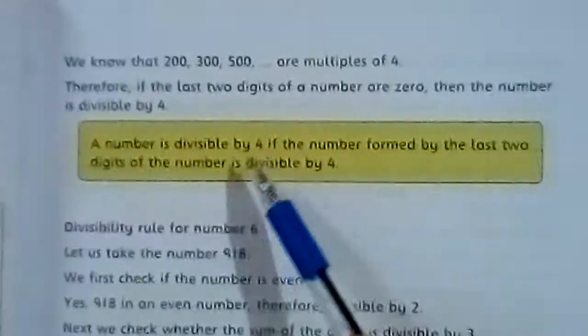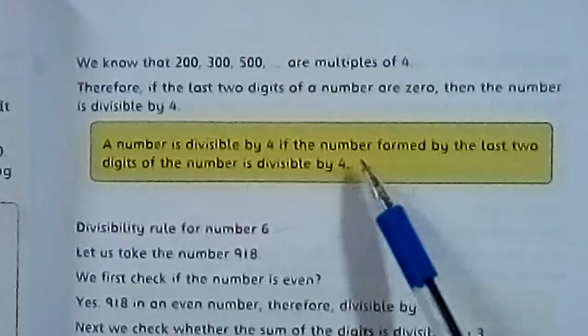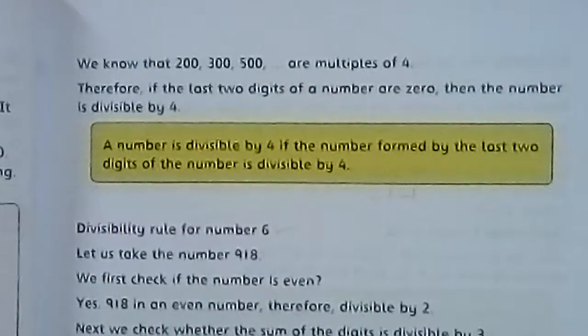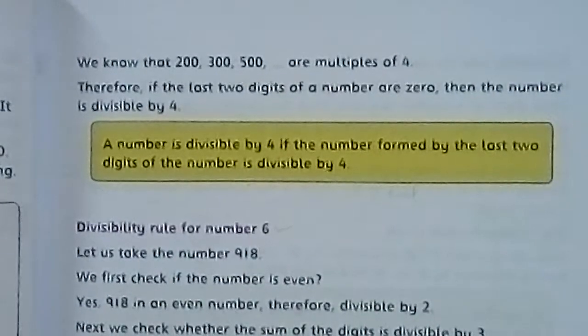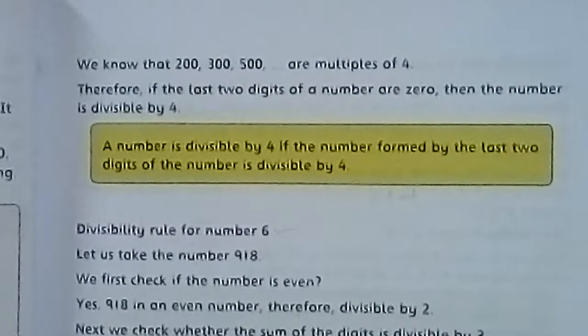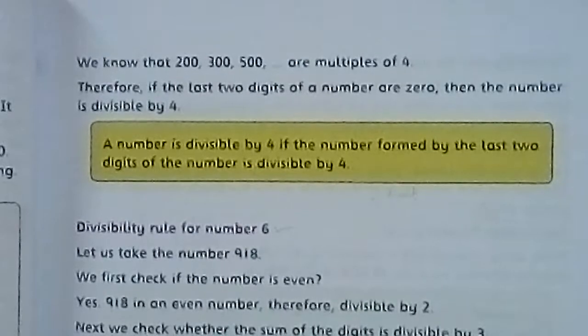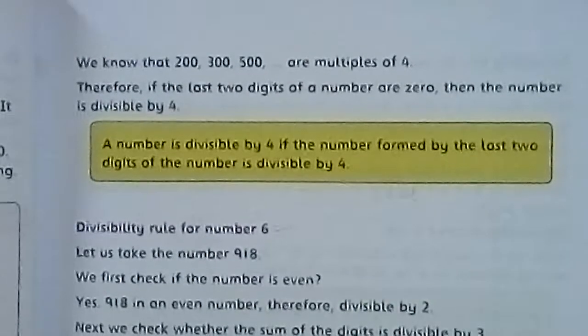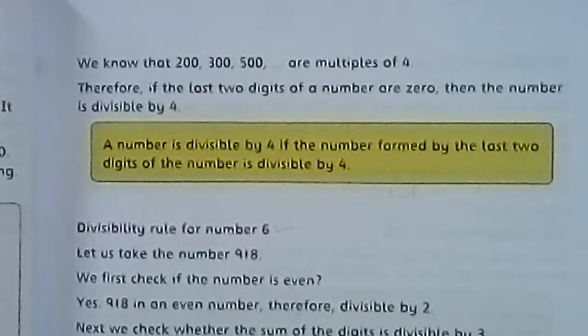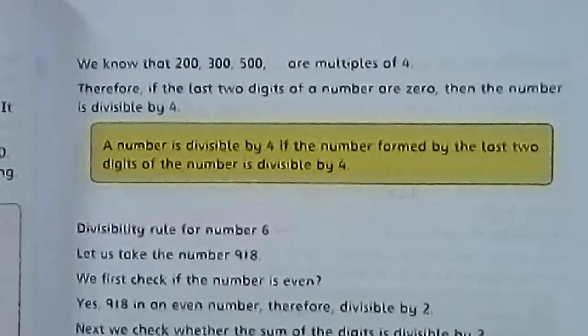A number is divisible by 4 if the number formed by the last two digits of the number is divisible by 4. So students, divisibility rule for number 4 ke liye aap ke paas do conditions hain. Aik toh ye ke last two digits agar divisible by 4 hain, it means ke pura number divisible by 4 ho ga. Secondly, agar last two digits aap ke 0 hain, it also means ke pura number aap ke divisible by 4 consider ho ga.